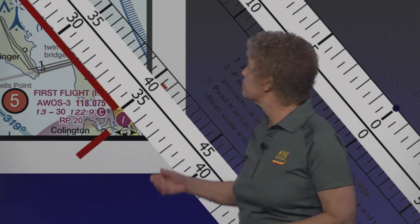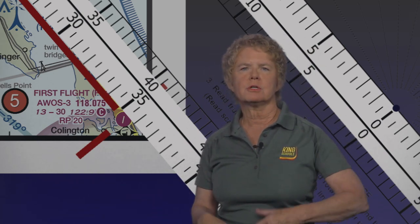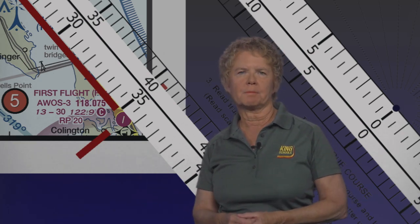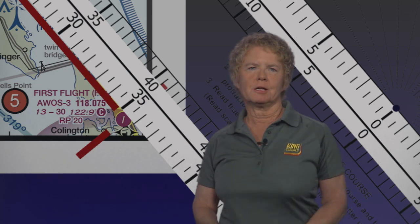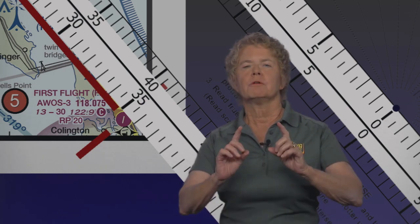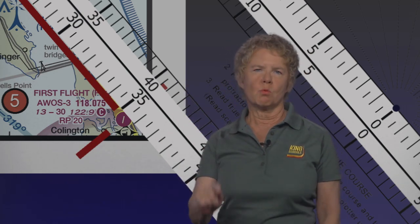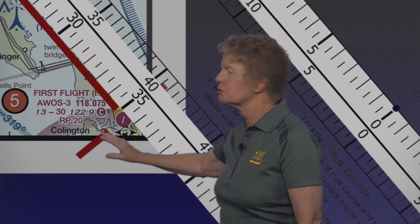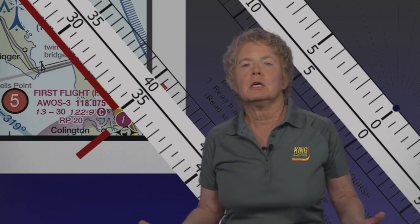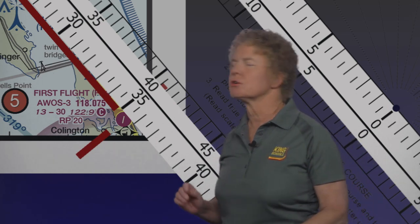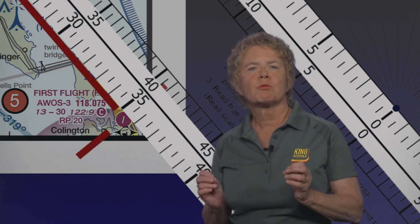The way we just measured distance using the plotter is exactly how you'll do it for flying your cross-countries on your checkride and in real-world flying, because in all those cases you'll be working with paper charts with a very high level of quality control. However, for the FAA written exam, using the plotter like this to measure distance will not work. That's because the sectional chart excerpts in the FAA Supplemental Testing Book are not to scale, and the scale errors can vary wildly.